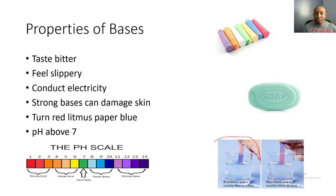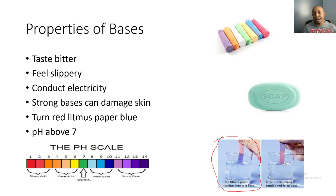Bases also turn red litmus paper blue. When we dip red litmus paper into a basic solution, it turns blue because the solution contains a lot of hydroxide ions. Bases have a pH above seven — from 8 to 14. The further from seven, the stronger or more dangerous the base becomes. Baking soda sits around 8, hand soap around 10, and drain cleaner, bleach, and ammonia are at the far end. Bases feel slippery, like hand soap, and taste bitter, like chalk or pure chocolate without sugar.